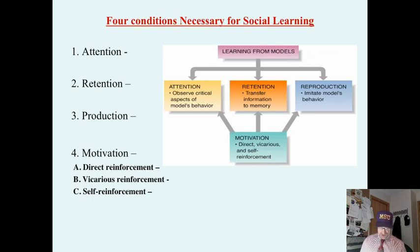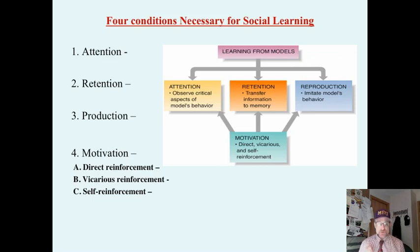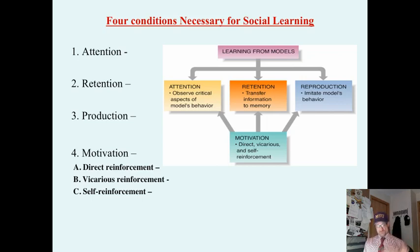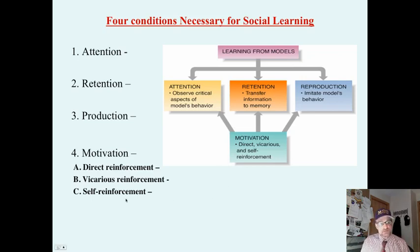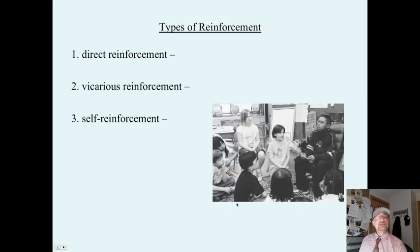And motivation. Individuals must be motivated to act in certain ways. Social cognitive theory is a form of behaviorism, so we'll be looking at external motivation and reward. And we'll be looking at these three types of reinforcement.